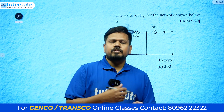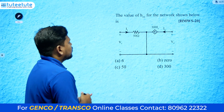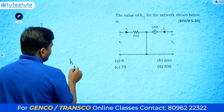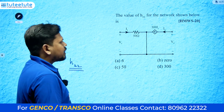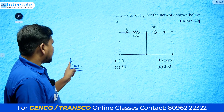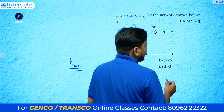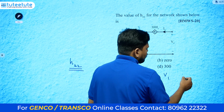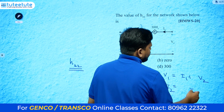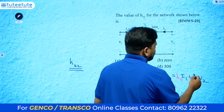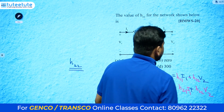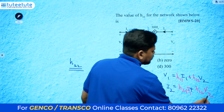I have taken different kinds of dependent source problems so we will understand all of them. The first question asks for the value of h22 for the network shown. h22 means hybrid parameters. For two-port network problems, whatever parameters they are asking, we need to write down the entire equations. For h-parameters: v1 equals h11*i1 + h12*v2, and i2 equals h21*i1 + h22*v2.